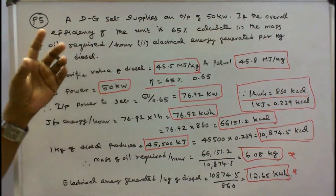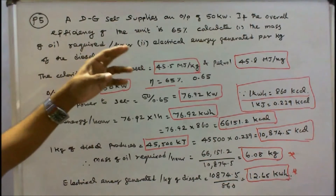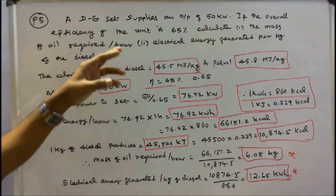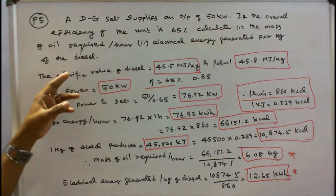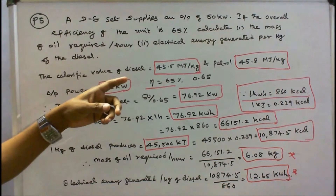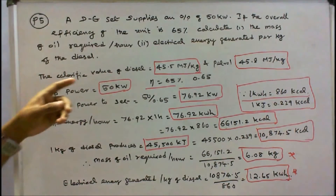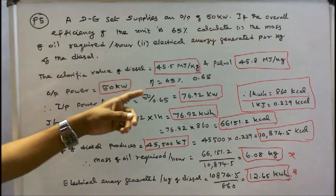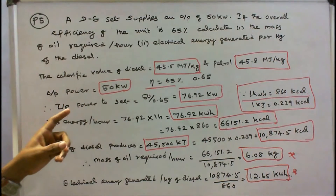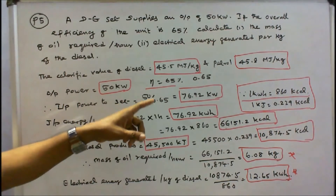Problem 5: A diesel generator set supplies an output of 50 kW. The overall efficiency of the unit is 65%. Calculate: 1) the mass of oil required per hour, and 2) electrical energy generated per kg of diesel. The calorific value of diesel is 45.5 megajoules per kg. Output power is 50 kW and efficiency is 0.65, so input equals 50 divided by 0.65, which is 76.92 kW.